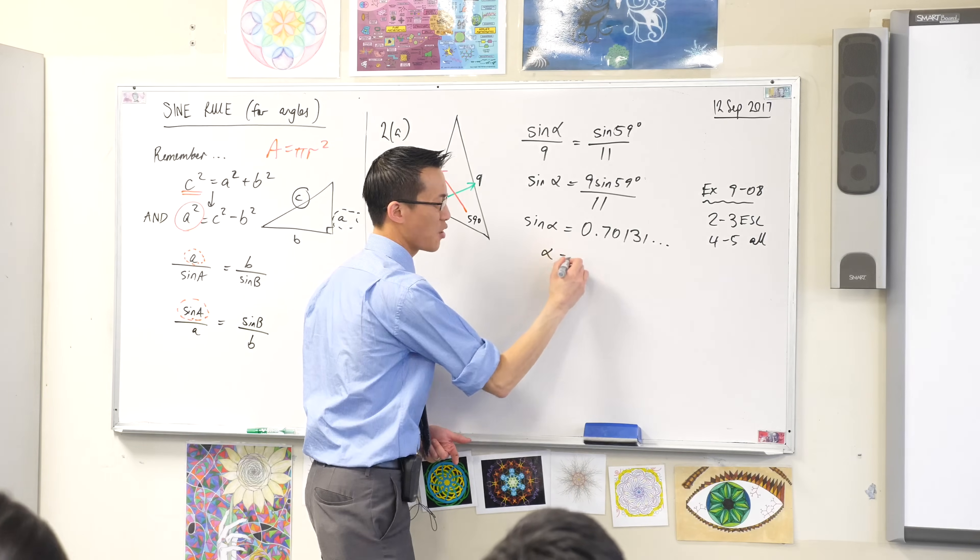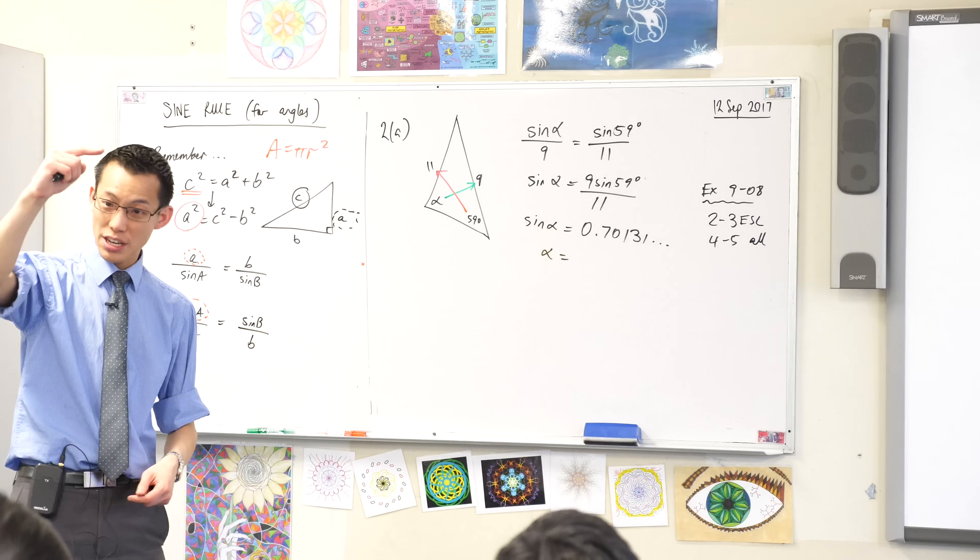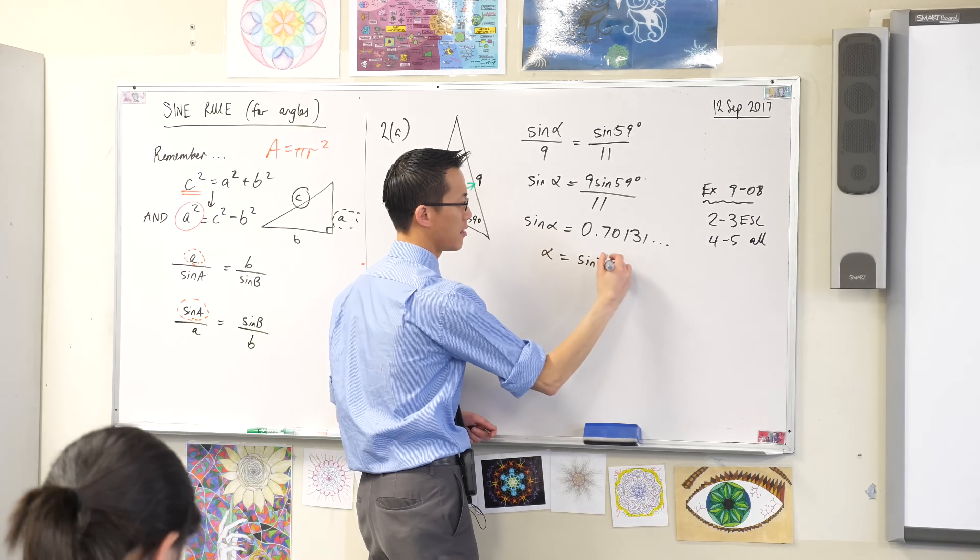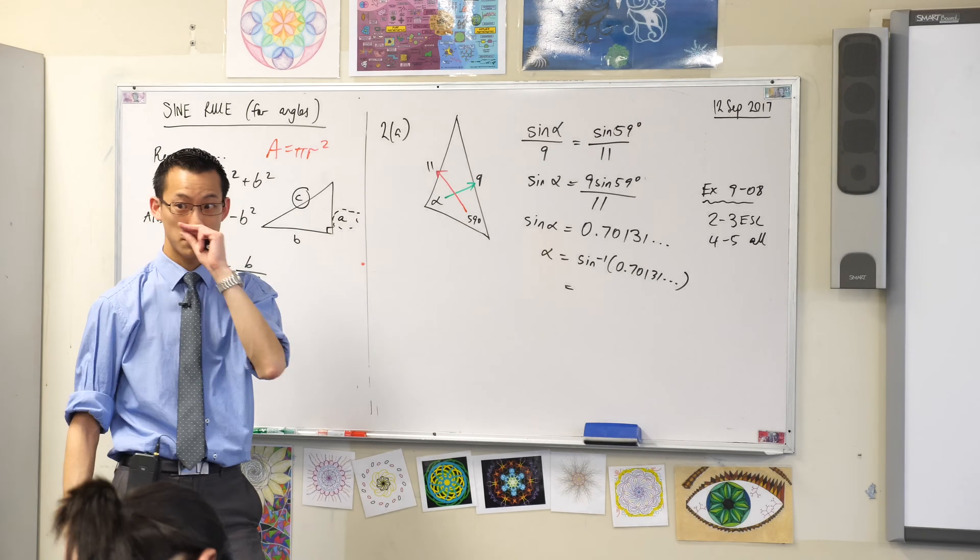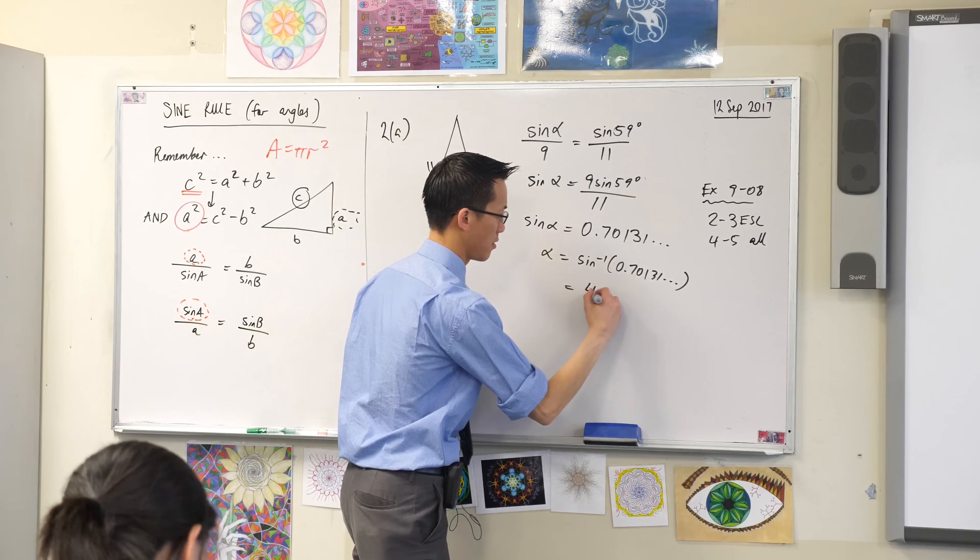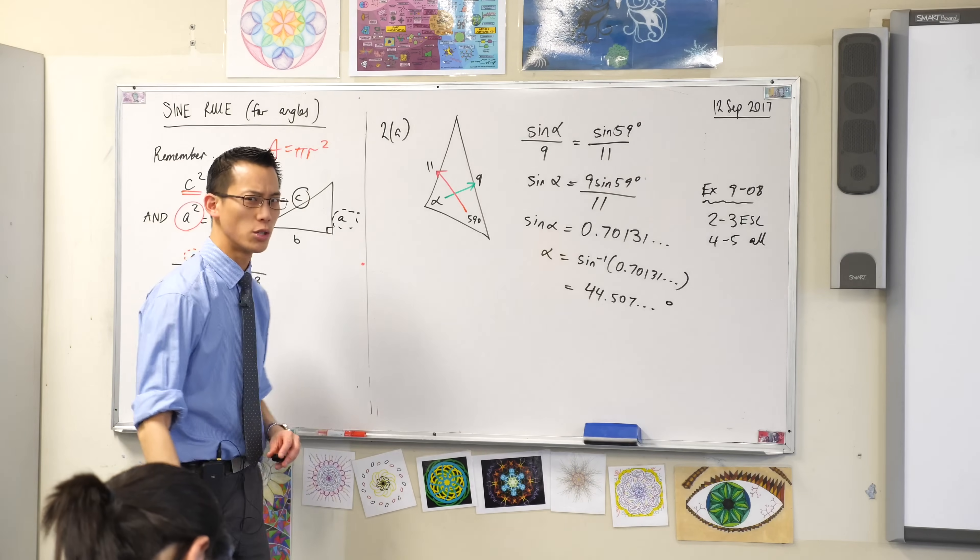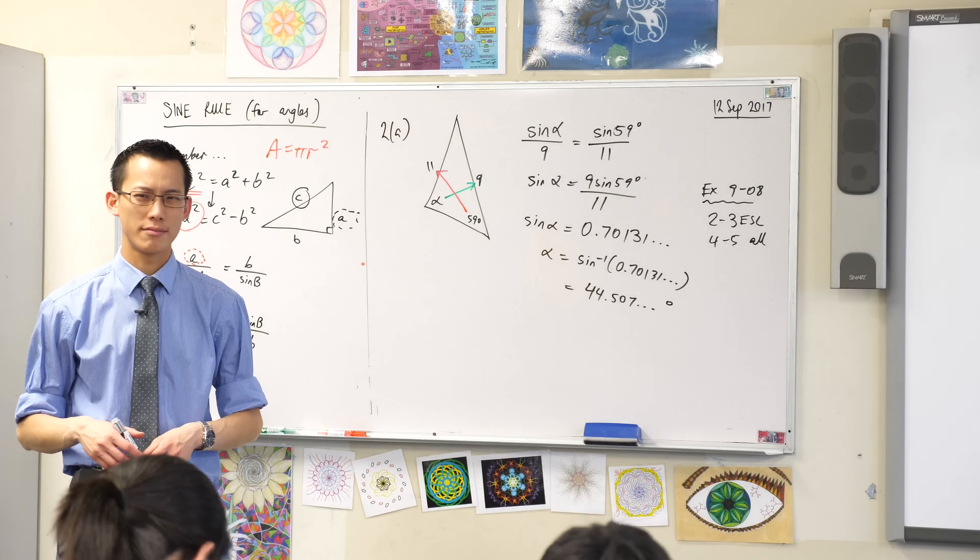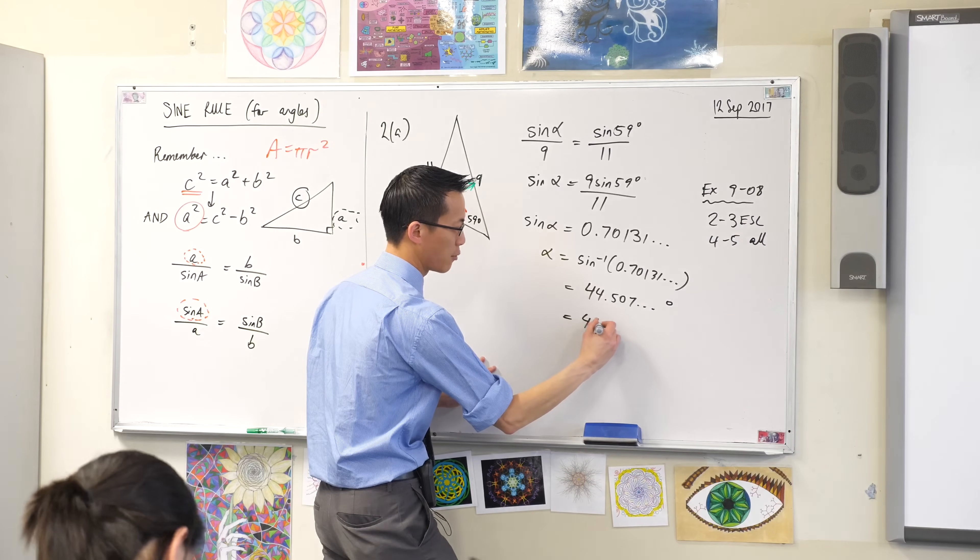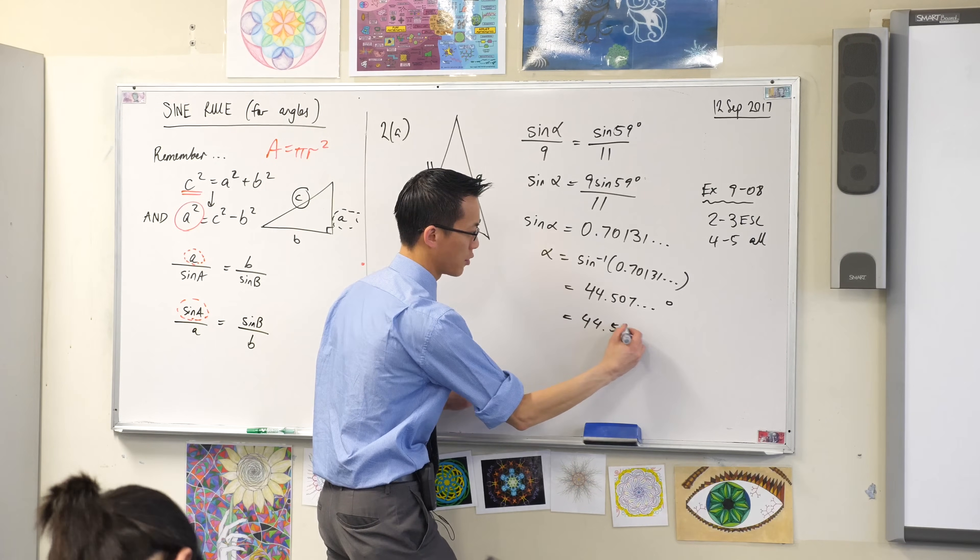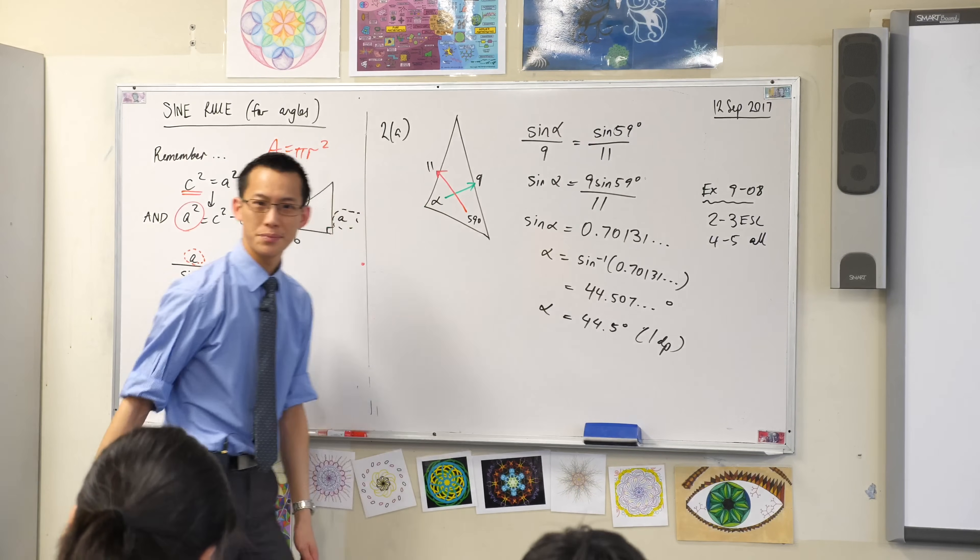The next step is, I actually don't want sine of alpha, I want alpha. So what will I do? Yeah, shift, sine, so you're going to get this on your calculator display, dot, dot, dot, which is equal to, say again, 40, dot, dot, dot, dot. Now, at this point, look at the question, look at the question. Does it ask for approximation of any kind? 0.1, okay. So in this case, that'll be 44.5 degrees. Yep, 0.1 degrees, one decimal place, yeah. That's alpha, okay.